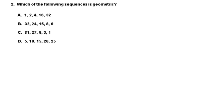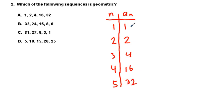Next, which following sequence is geometric? A lot of people were tricked by A. If you set these up as N, A sub N, we have 1, 2, 3, 4, 5. Looking at choice A, the values are 1, 2, 4, 16, 32. To get from 1 to 2, that's times 2. From 2 to 4, that's times 2. But are we going to get 4 to 16 by times 2? No, that's times 4.